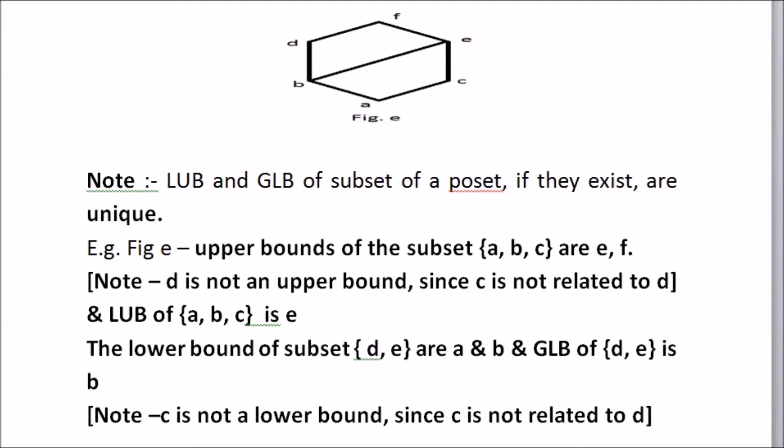Taking D and E, as we move in a downward direction, we come across B and A. The lower bound is A and B, and the GLB of D and E is B. Because coming from D and E downwards, E and B are connected. There is no line going to C and D, so the GLB is B.